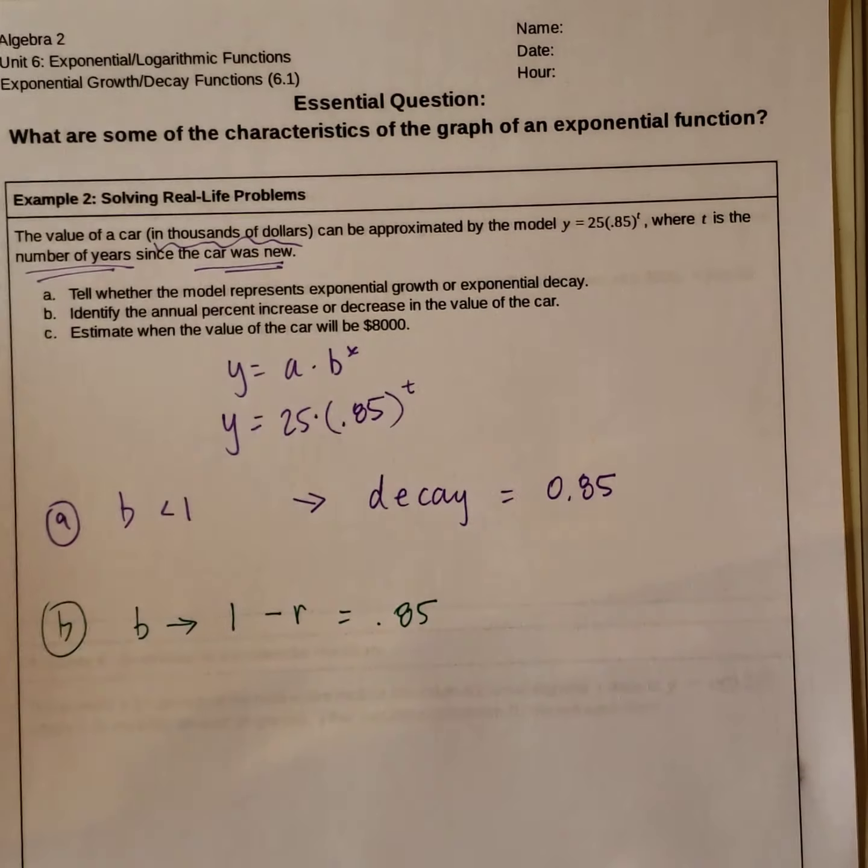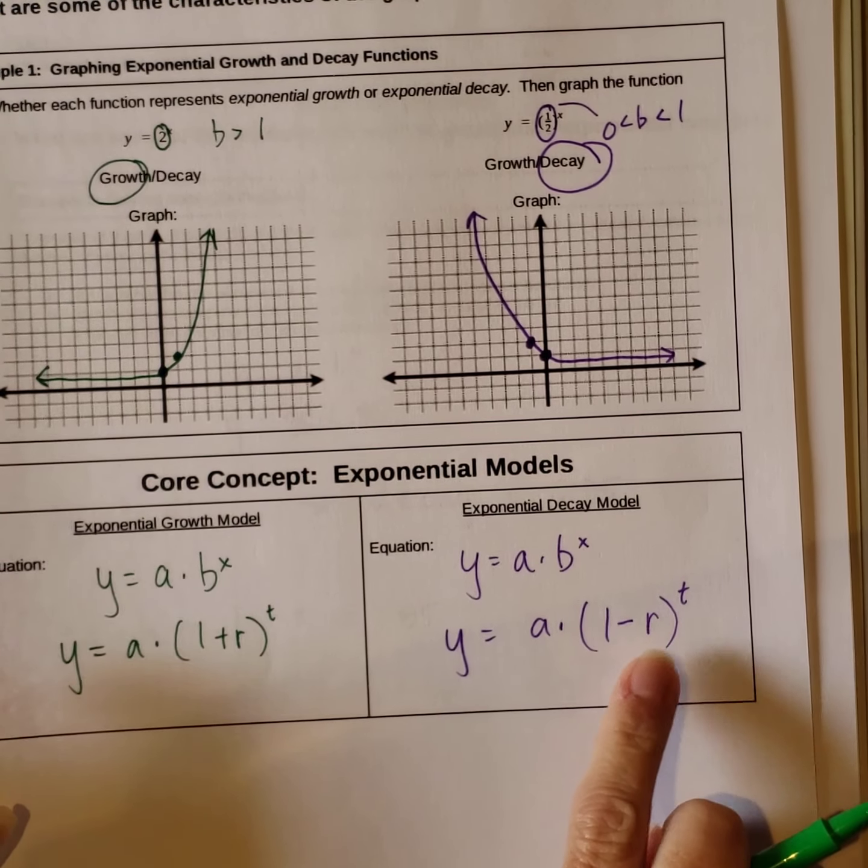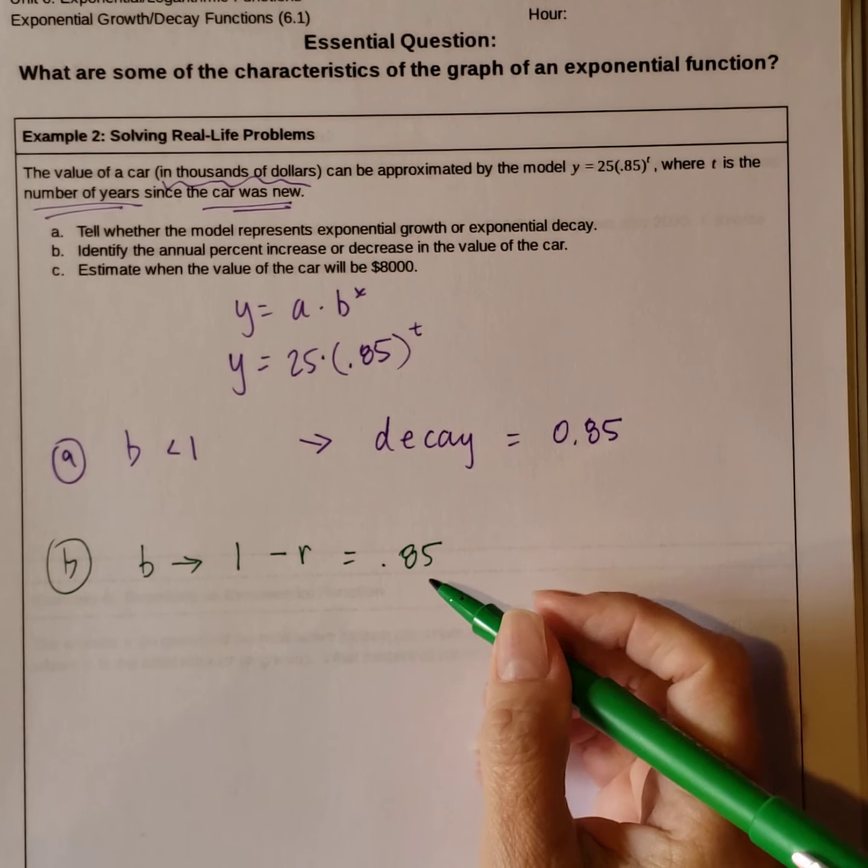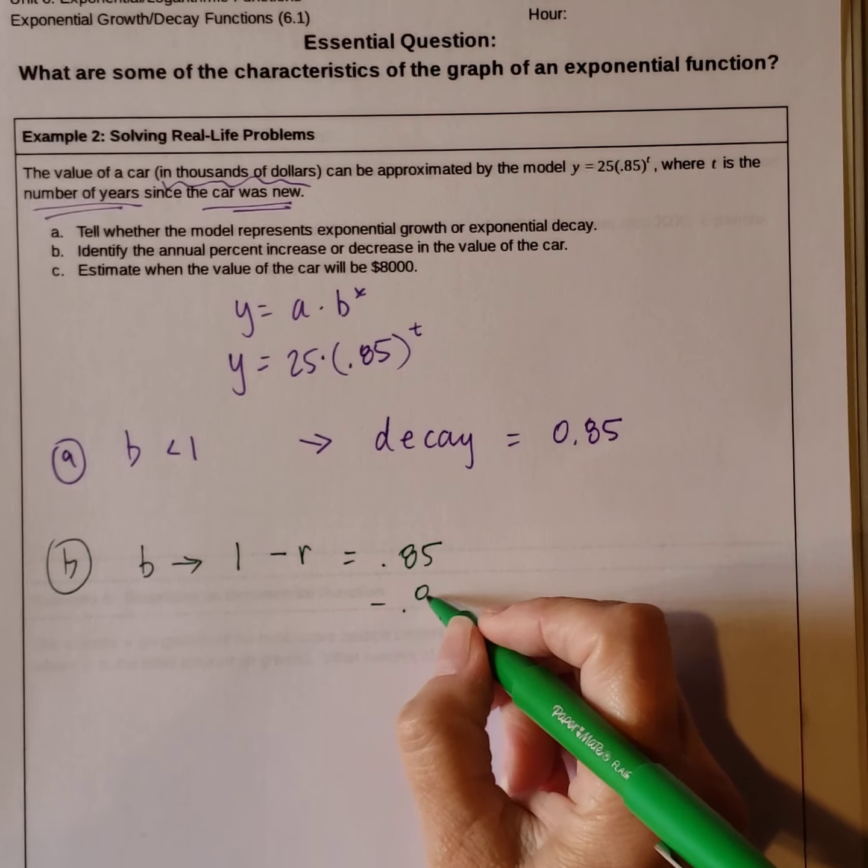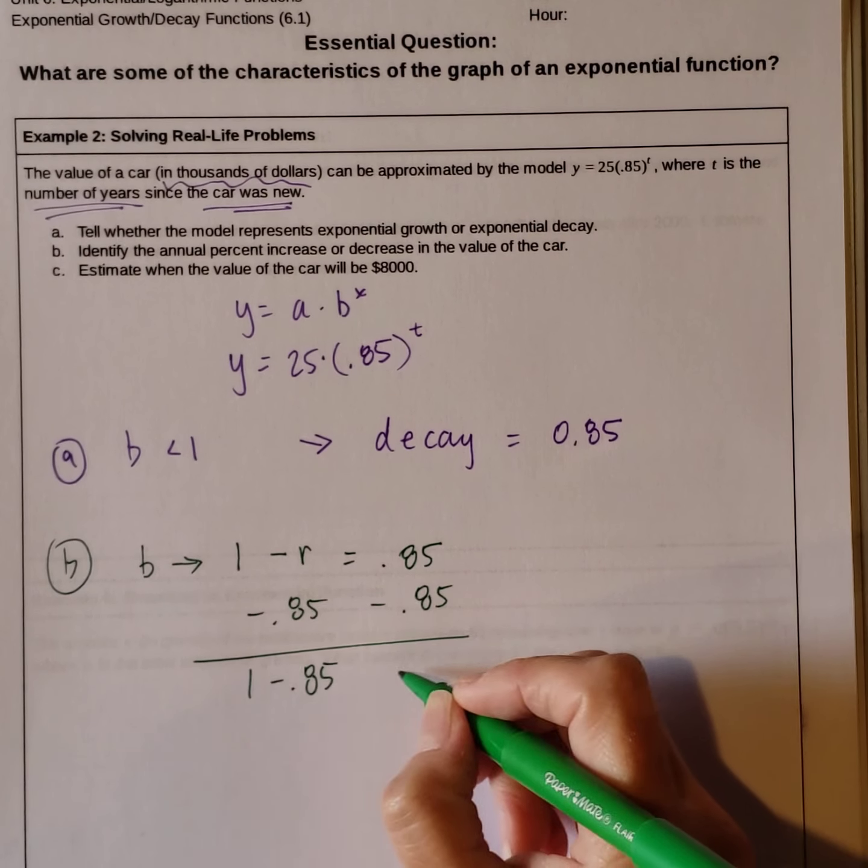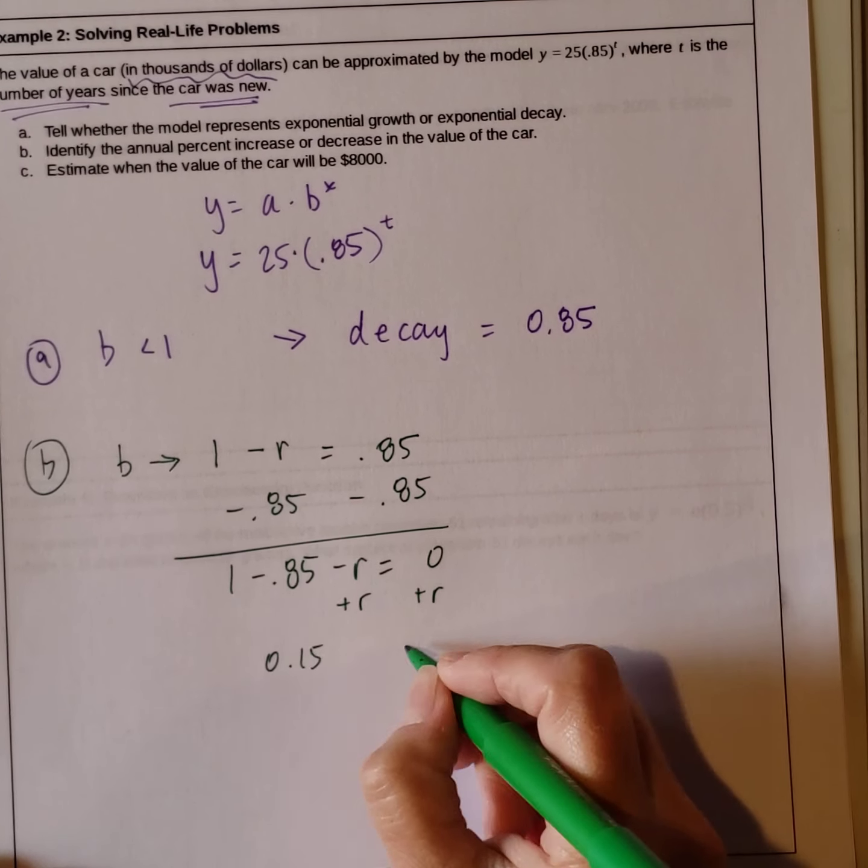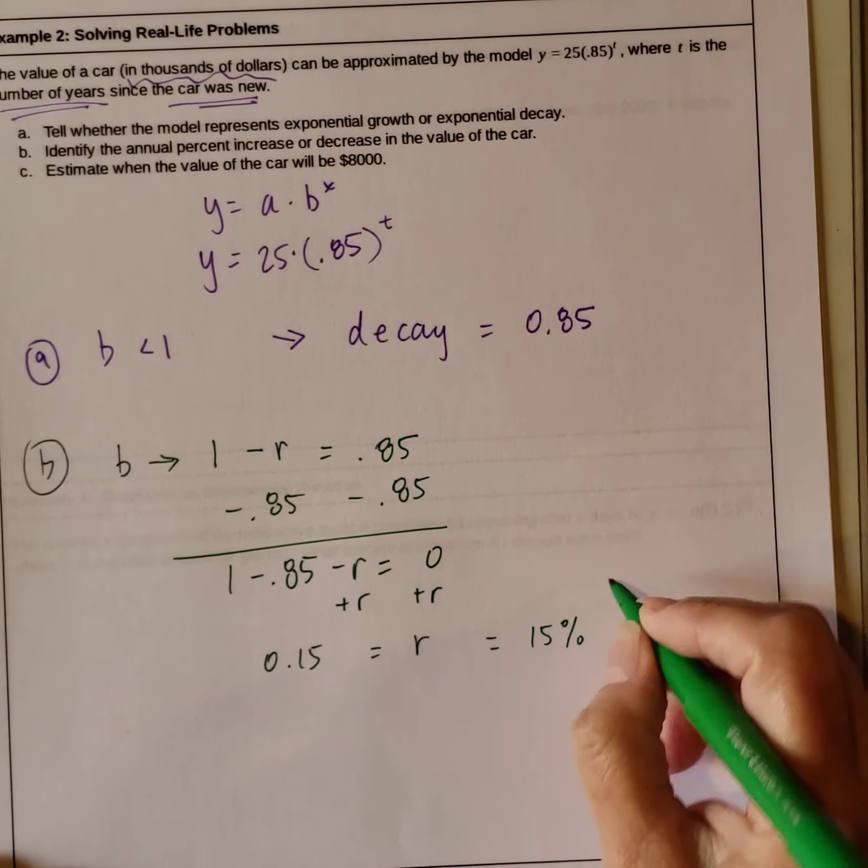So decay, we have decay, so we're looking at the b value, the 1 minus r. And that gives us the rate, the r is our rate. So we want to solve for the r. So 1 minus r equals .85. So you can subtract .85. So we have 1 minus .85 minus r equals 0. Add the r to both sides. So 1 minus .85 gives us .15. And that is our r. Or we can also say it's a 15% decrease.